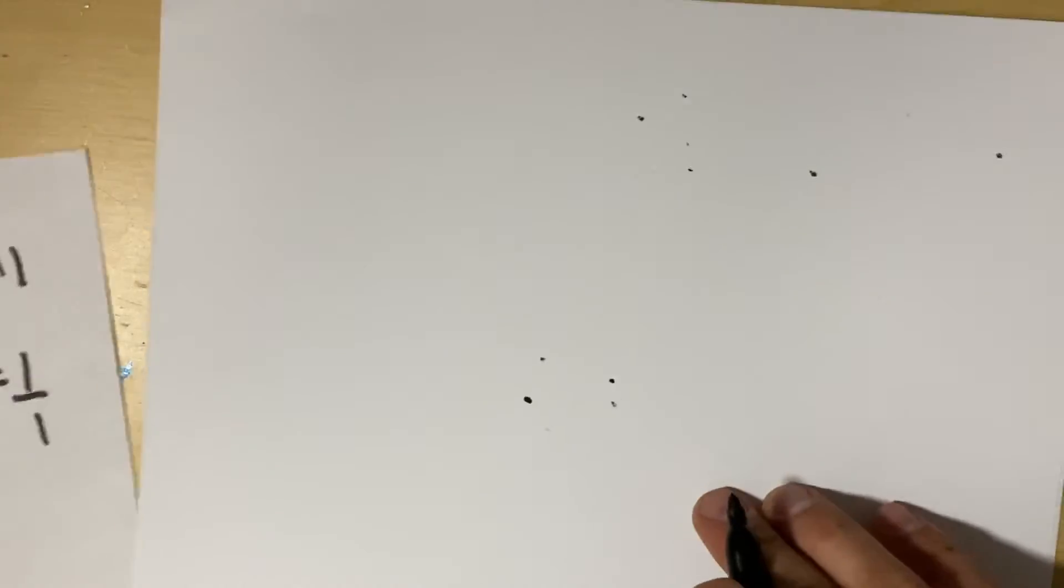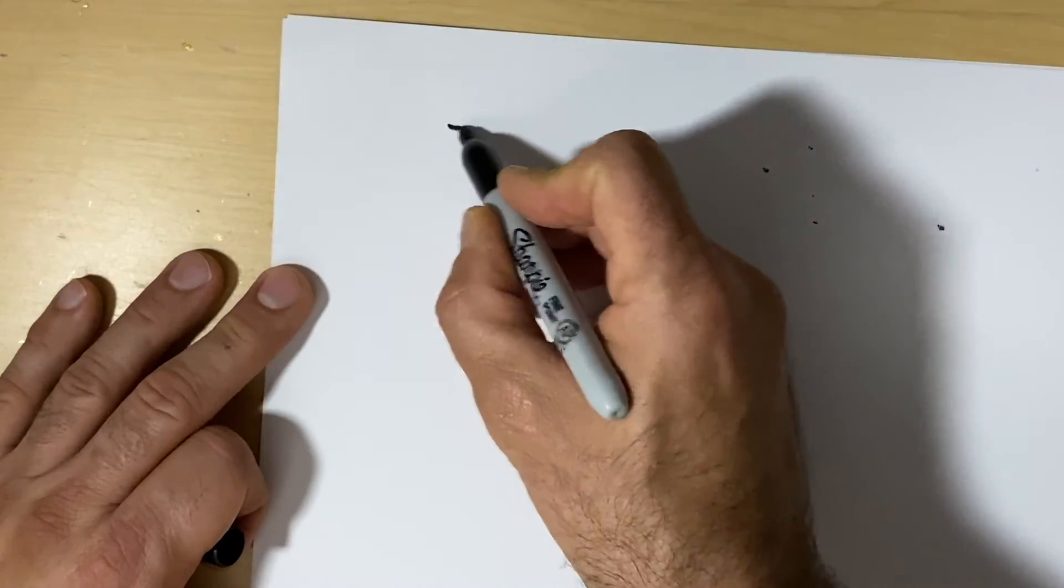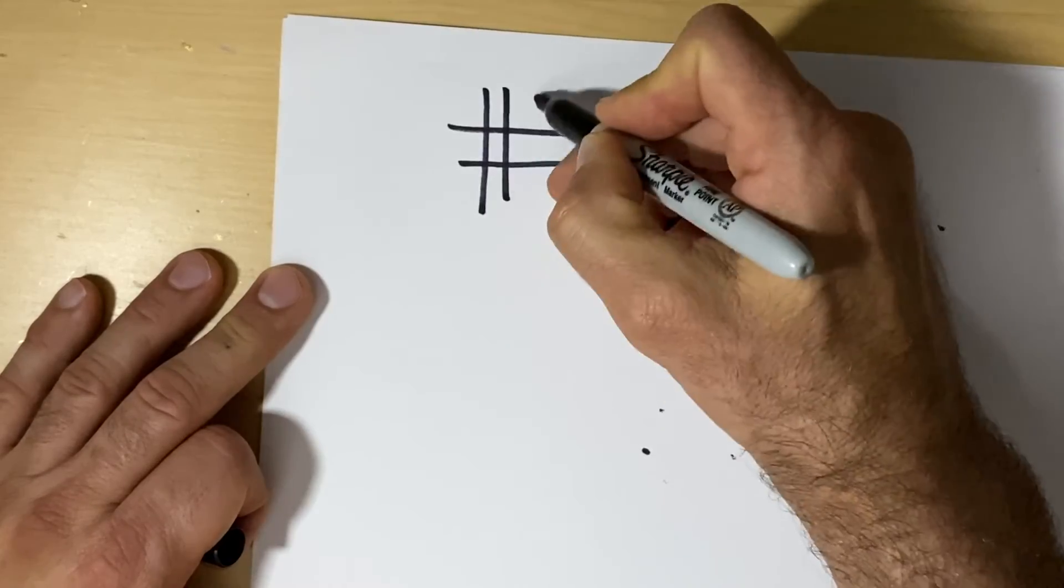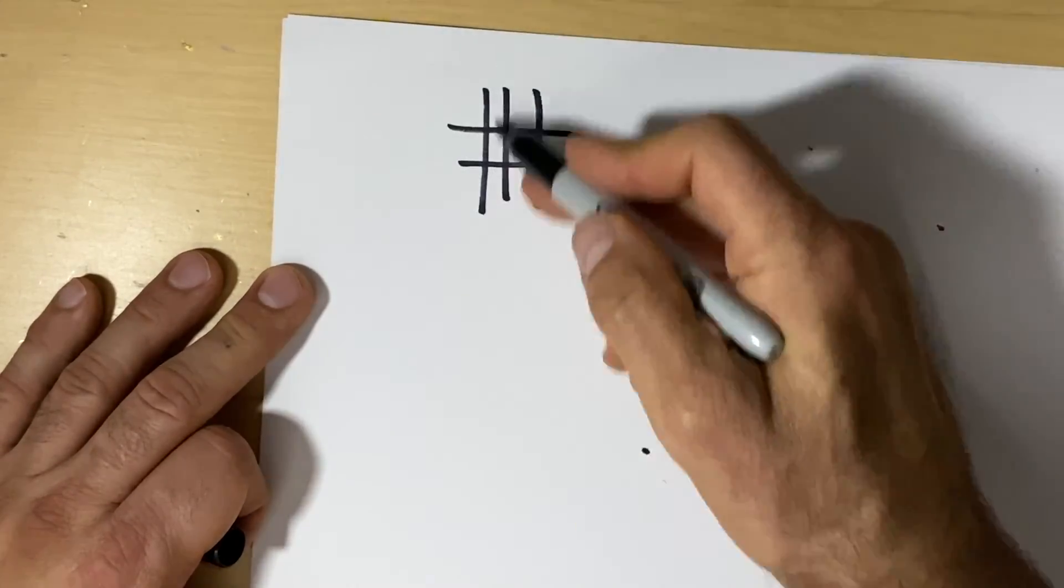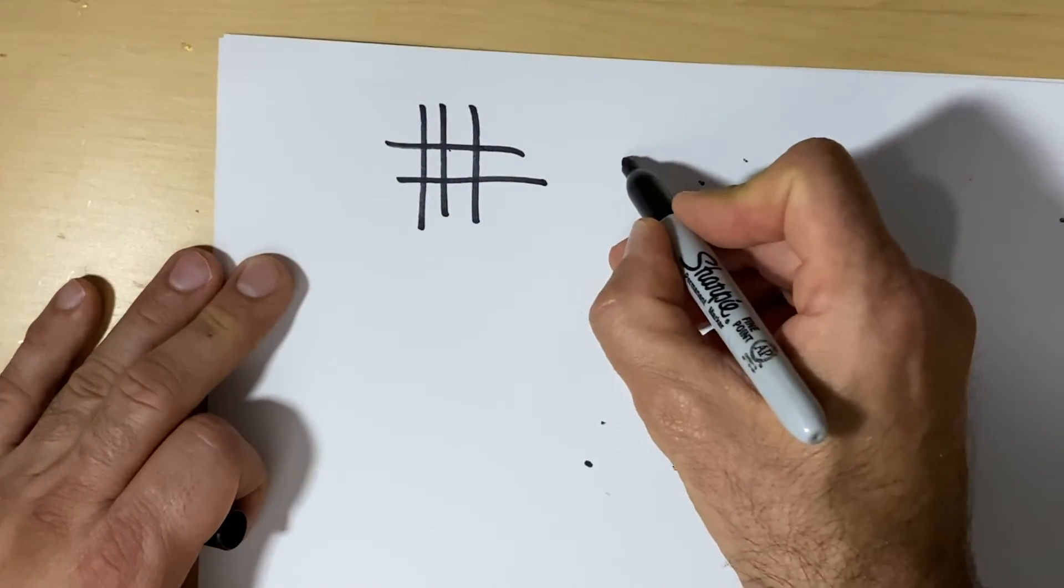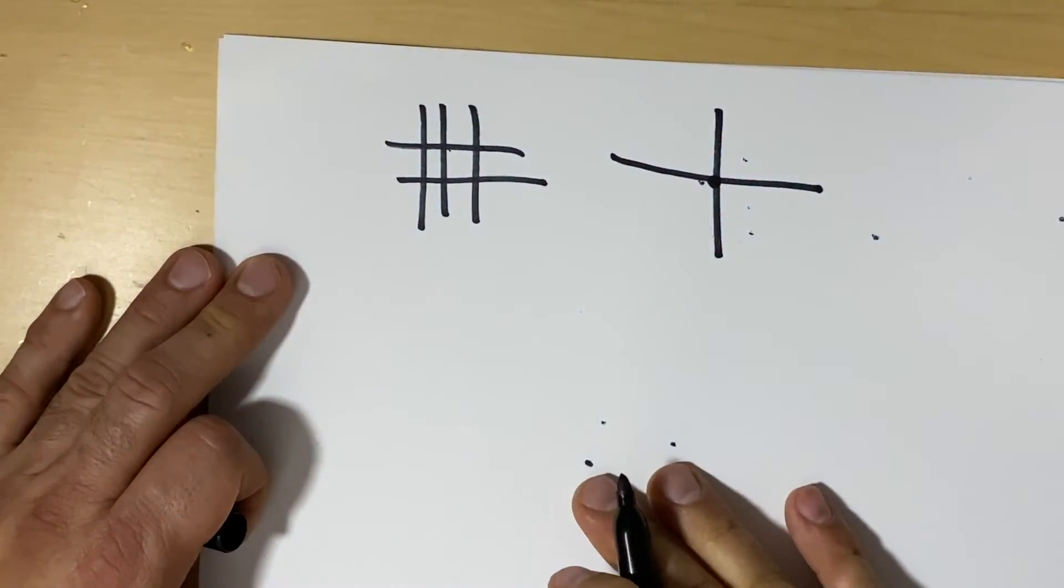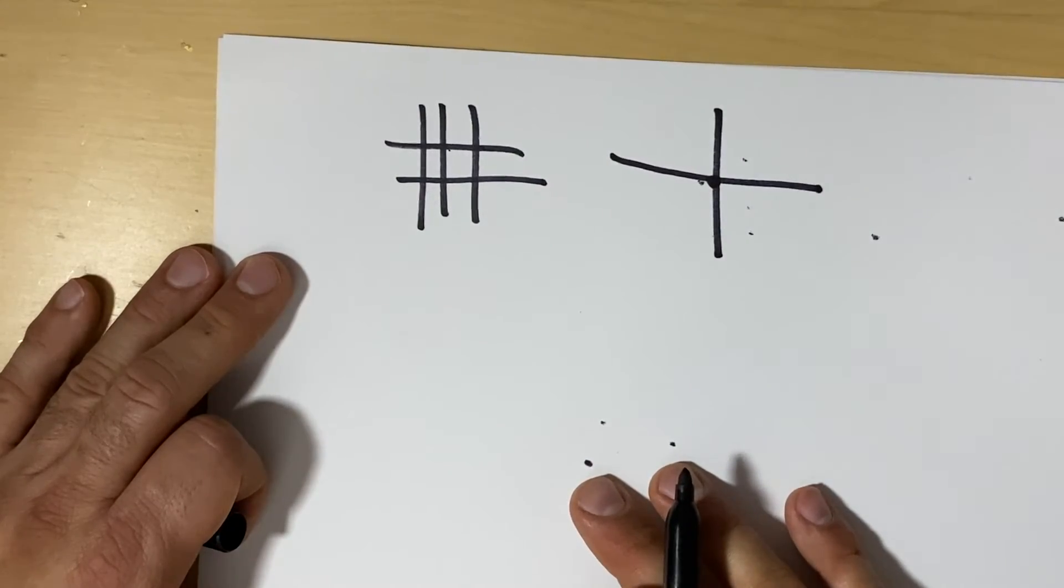You could also look at it as rows and columns. So if I say 2 times 3, I'm thinking of 2 rows and 3 columns, and I have 6. If I say 1 times 1, it's 1. It's the intersections of rows and columns.